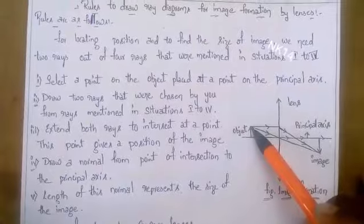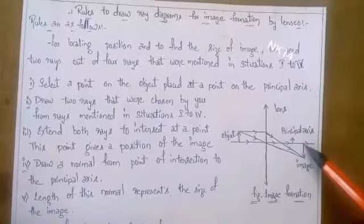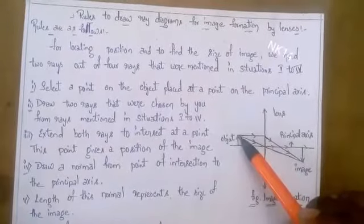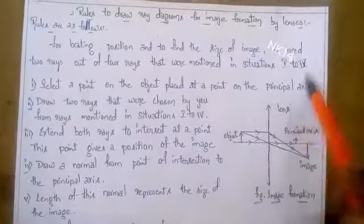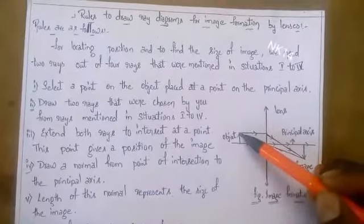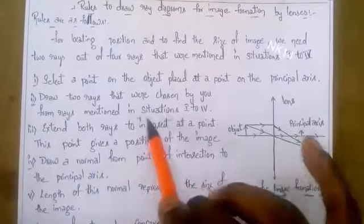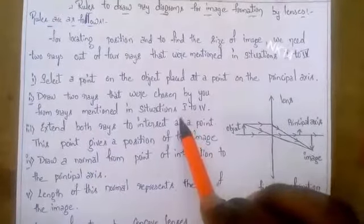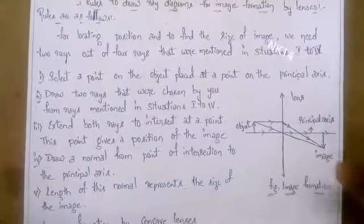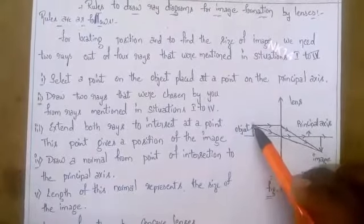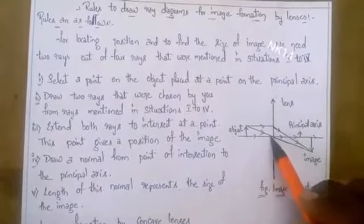The base of the object is in contact with the principal axis, so the image base will also be in contact with the principal axis. For the top of the object, I have taken the important point — that is point C. Next, draw two rays that were chosen from the rays mentioned in situations one to four. I have chosen one ray which is parallel to the principal axis and another ray which is passing through the optic center.